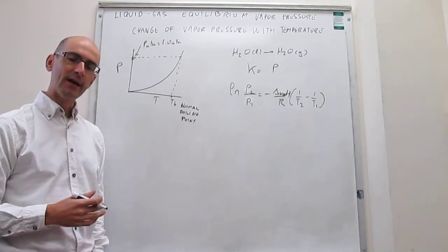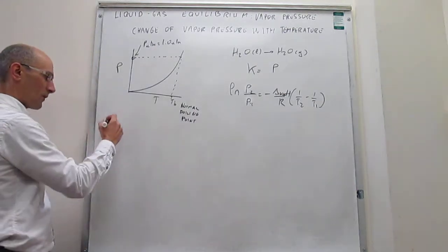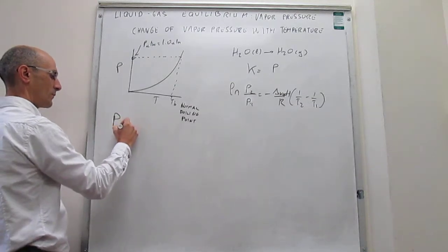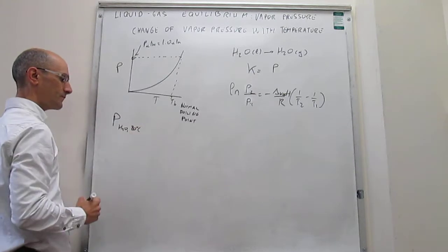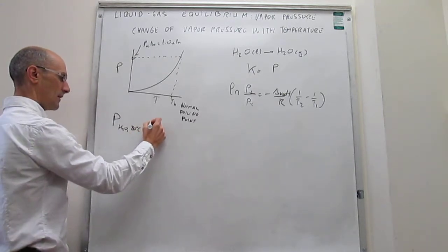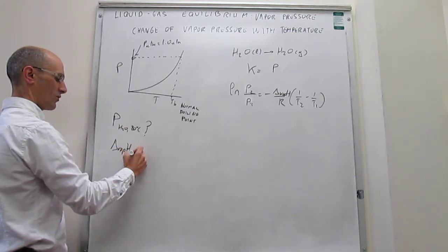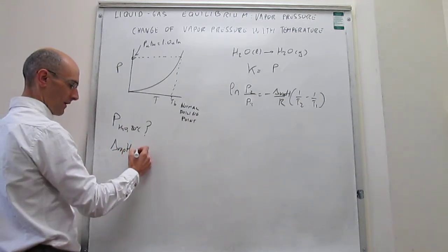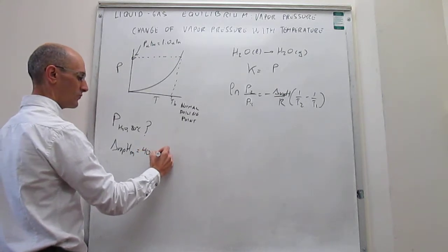So let's do a numerical example to see how this expression works out. So suppose that a problem is asking us to calculate what the vapor pressure of water would be at 80 Celsius, given that the enthalpy of vaporization of water, and this is going to be a molar quantity, is equal to 40.7 kJ per mole.